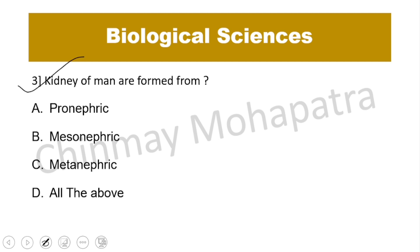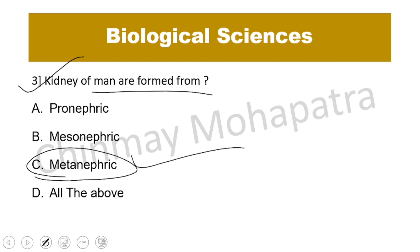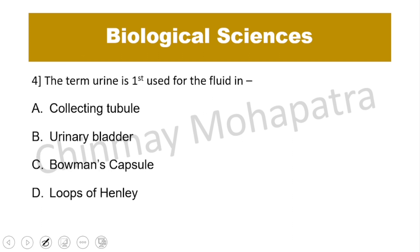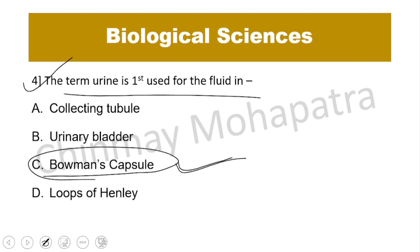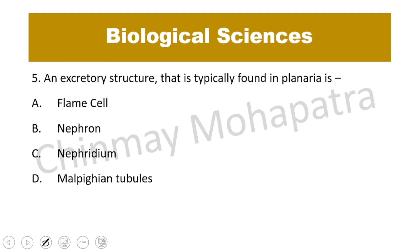Question number 3: The kidneys of man are formed from? The right answer is metanephric kidney — the advanced kidney. Question number 4: The term urine was first used for the fluid in? The right answer is Bowman's capsule.